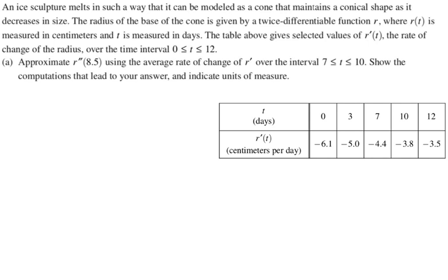Part a is weird because they tell you exactly what to do. They say approximate r double prime of 8.5. Usually that's where the question just stops, but this continues using the average rate of change of r prime over the interval from 7 to 10. Show the computations lead to the answer and indicate units of measure. So average rate of change is algebra 1 slope. We're going to say that r double prime of 8.5 is approximately the average rate of change on 7 to 10. So it's going to be r prime of 10 minus r prime of 7 over 10 minus 7.